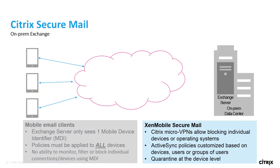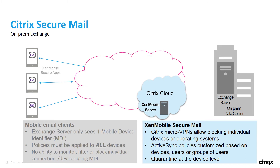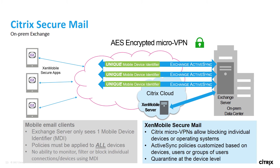The solution: deploy ZenMobile Secure Mail instead of cloud-based proxies for email. ZenMobile's AES-encrypted micro-VPNs provide unique mobile device identifiers, which are assigned at the app level, not just the device level. The benefits of this approach include the ability to block individual devices or operating systems, customize active sync policies based on devices, users, or groups of users, quarantining at the device level, and monitoring of individual connections or devices.